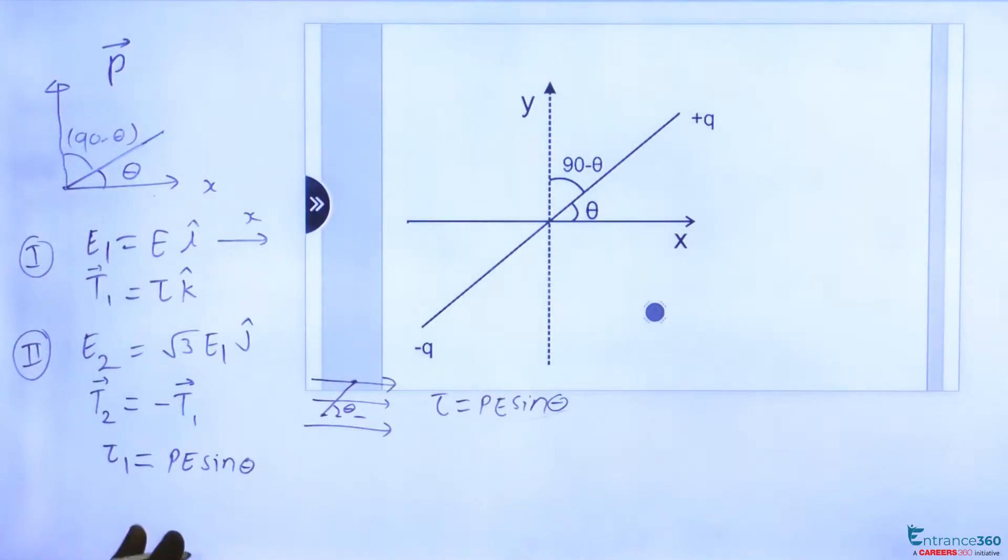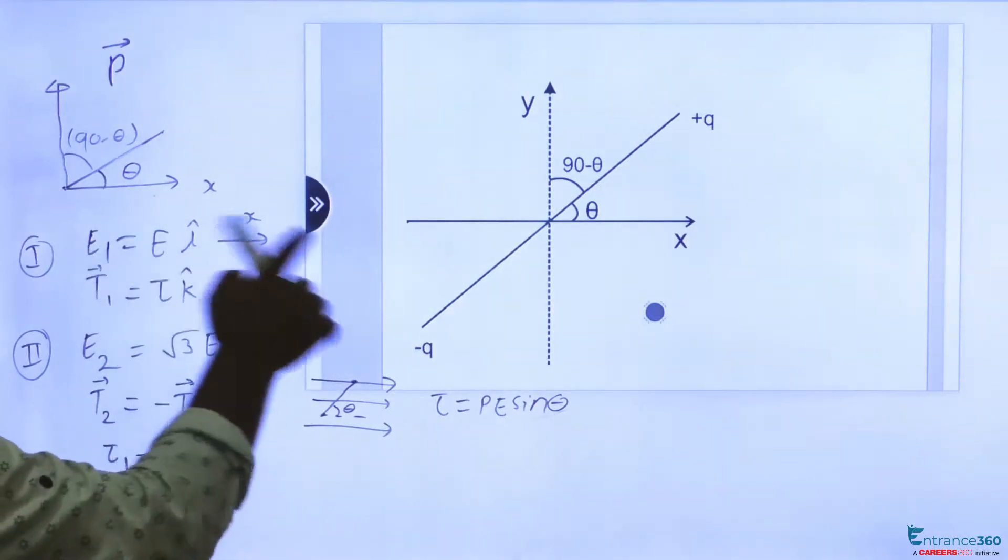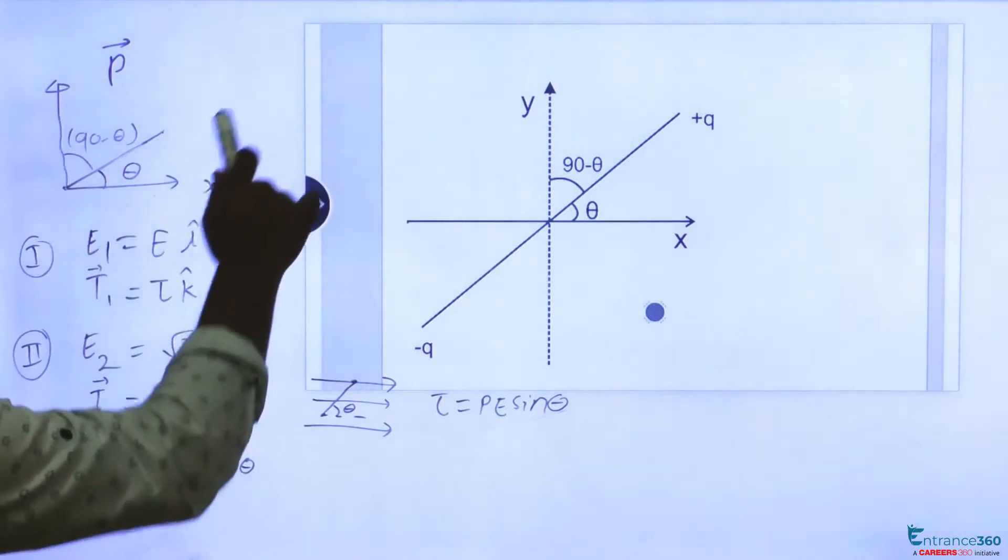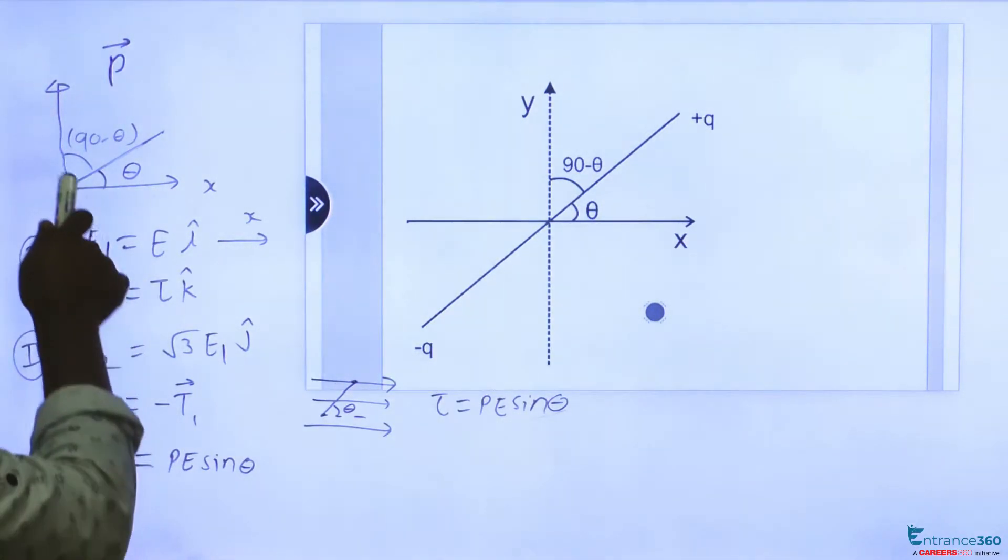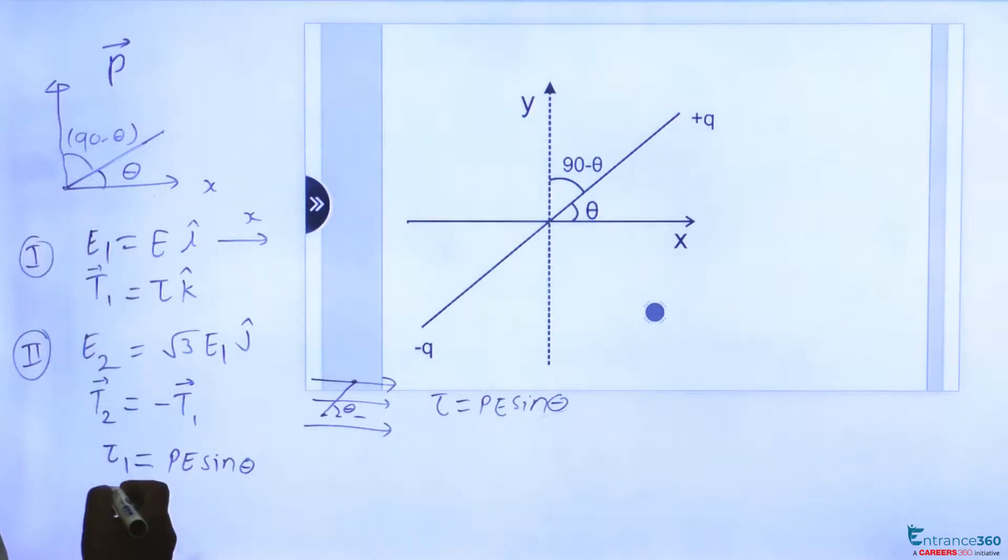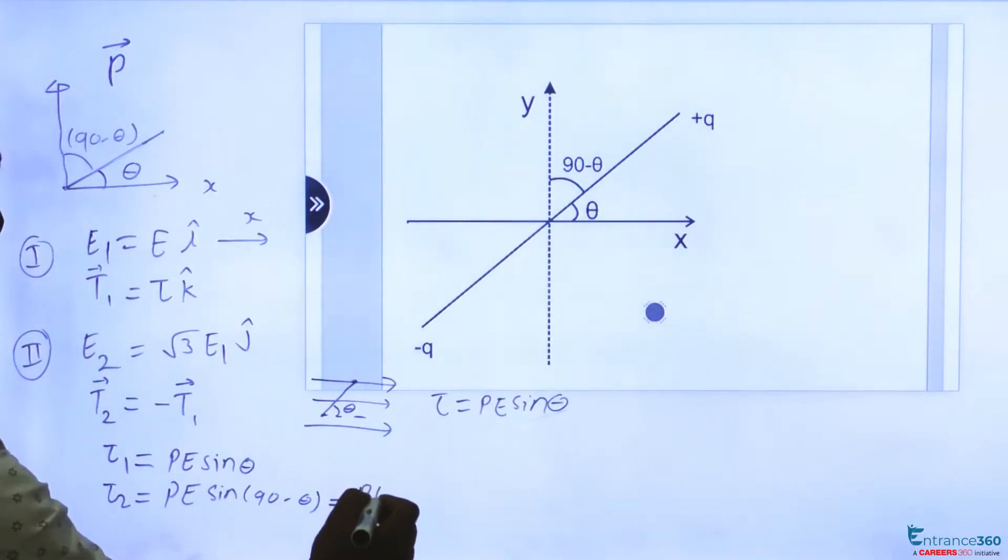And in the second situation when E₂ is in y direction and dipole moment is along this line, then the angle between electric field and dipole moment is given by 90 minus theta. So torque 2 would be PE into electric field into sin of 90 minus theta, which can be written as PE electric field cos theta.